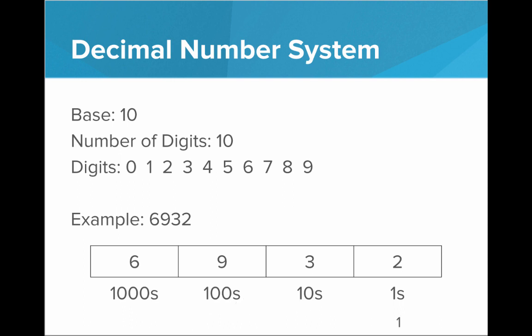So this is 1, this is 10, this is 10 times 10, this is 10 times 10 times 10. Thinking in terms of exponents, this is actually 10 to the 0, 10 to the 1, 10 to the 2, 10 to the 3, and so on. All we have to do is start from 0 and count upwards on the exponents. This is where we get the phrase 'base 10' from — the base of all of these exponents is 10.